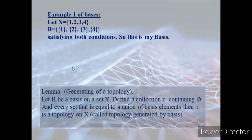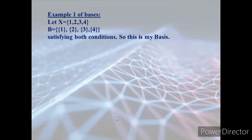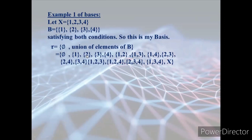Generating a topology: let B be a basis on set x. Define a collection τ containing the empty set, and every set that equals the union of basis elements — then τ is the topology on x. So from this basis on {1,2,3,4} we generate all possible sets, giving us the discrete topology on x.